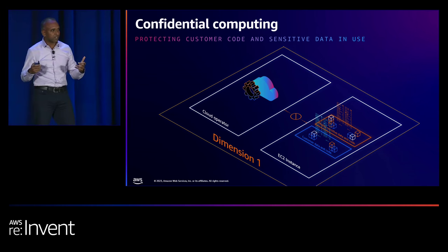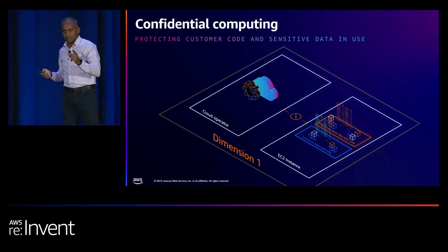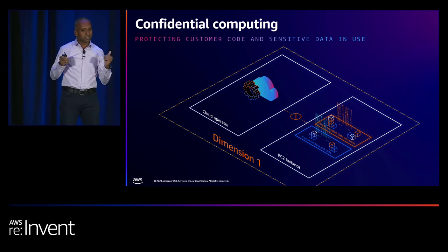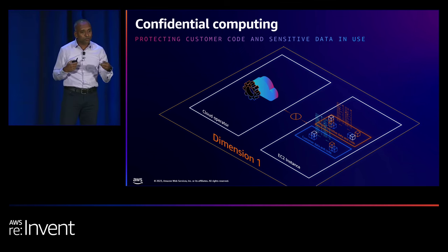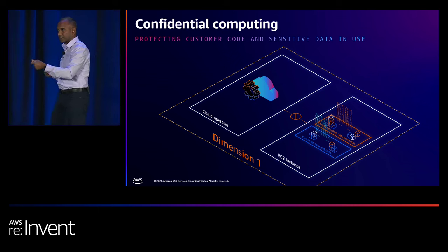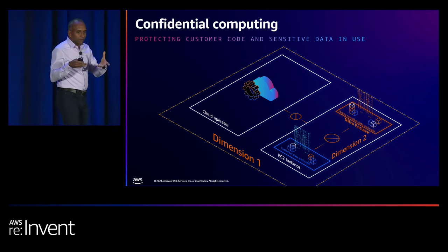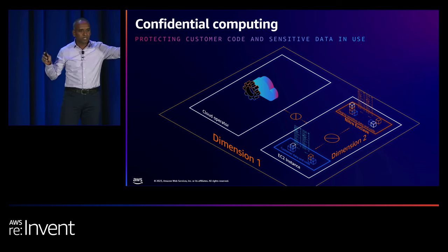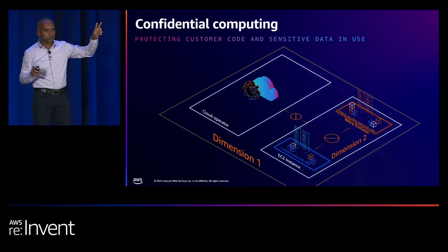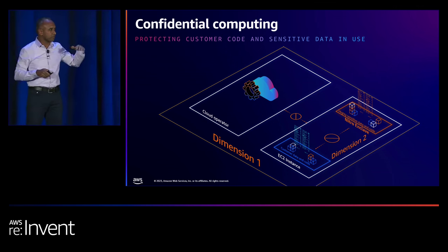Upon speaking to customers and partners, we have identified two distinct security and privacy dimensions. Dimension one is where customers want to ensure their data remains protected from any operator from the cloud provider — in this case, AWS. Dimension two is where customers want to protect their data even from themselves, even from admin-level users or malicious actors who could pose as admin-level users. Confidential computing: protecting data in use. Dimension one from us, dimension two from you.